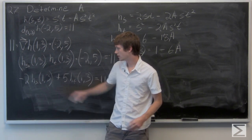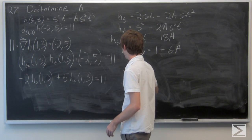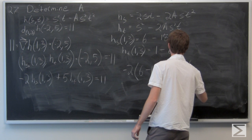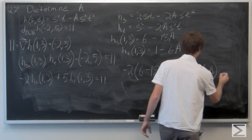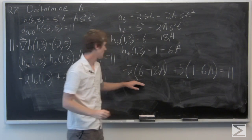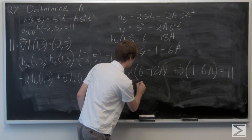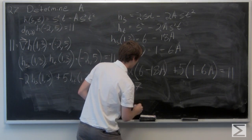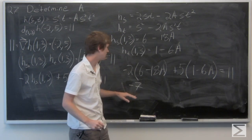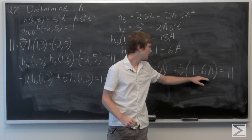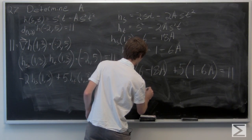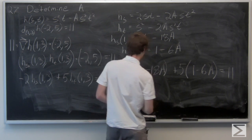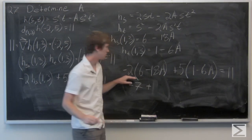So we can plug these into our given equation. -12 plus 5 is -7, plus 36a minus 30a.